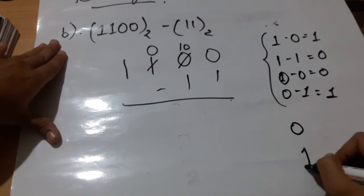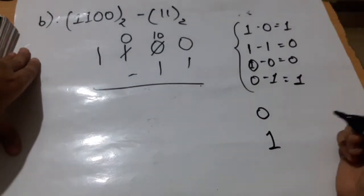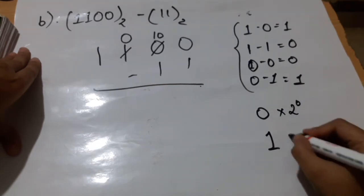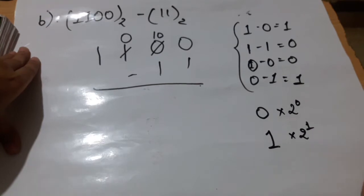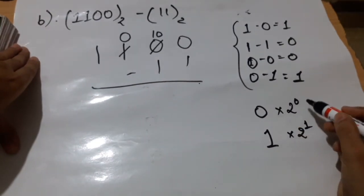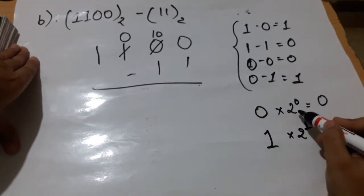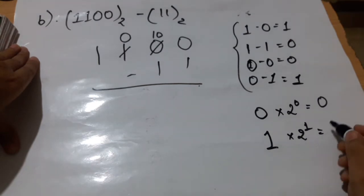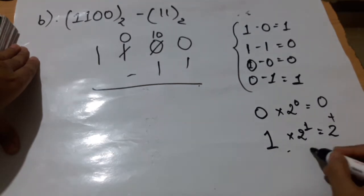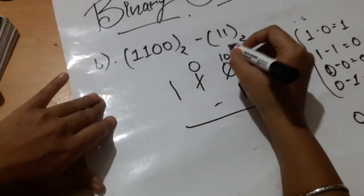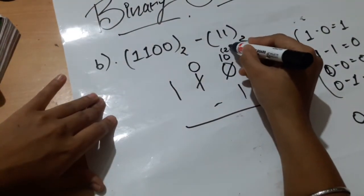To convert the binary number 10 to decimal: we do 0 multiplied by 2 to the power 0, which is 0, plus 1 multiplied by 2 to the power 1, which is 2. Adding these gives us 2. So the binary number 10 equals the decimal number 2.